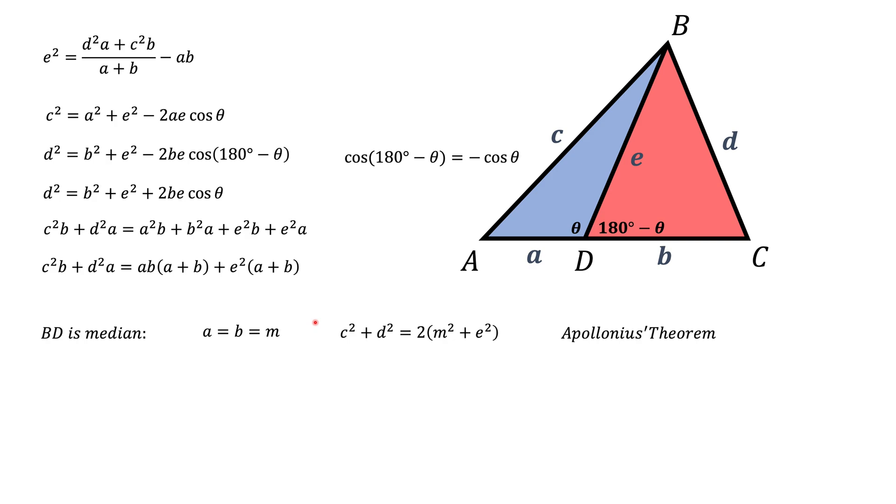The other important case is when BD is an angle bisector. In this case, we need to know angle bisector theorem. That tells us that ratio of A to B is the same as the ratio of C to D. If we apply this formula to this expression right here, we'll get a very simple expression for the length of angle bisector.